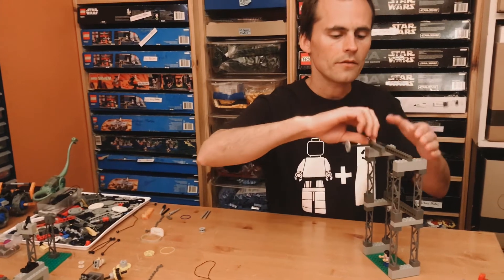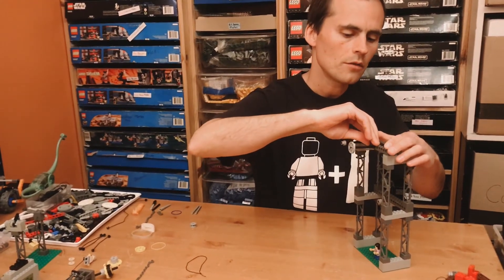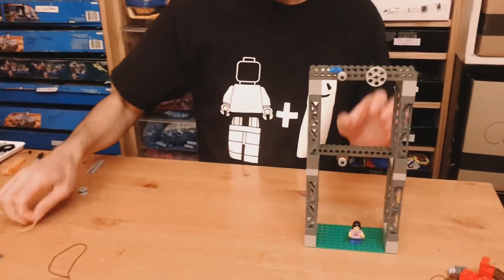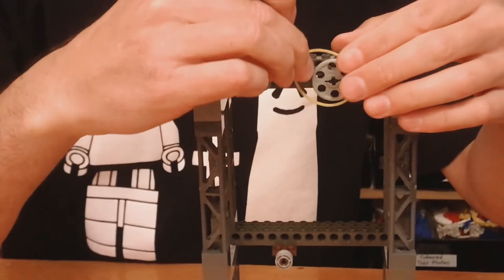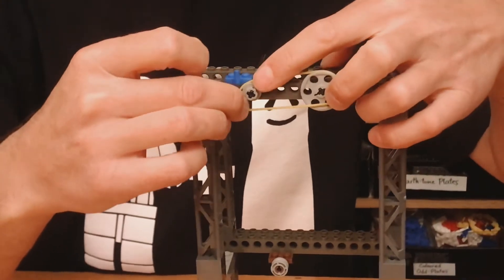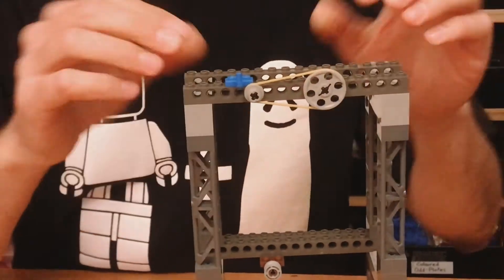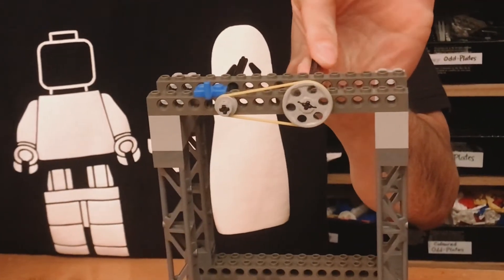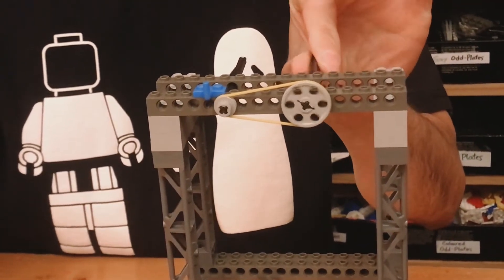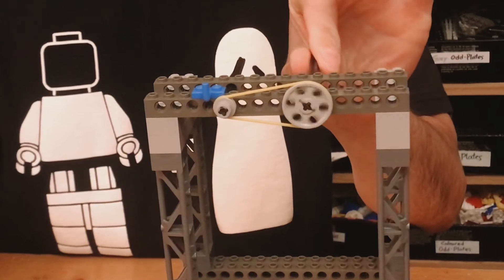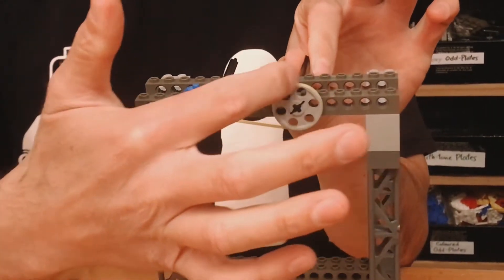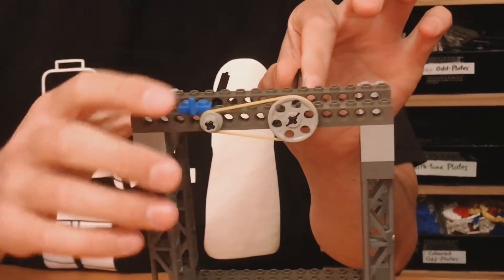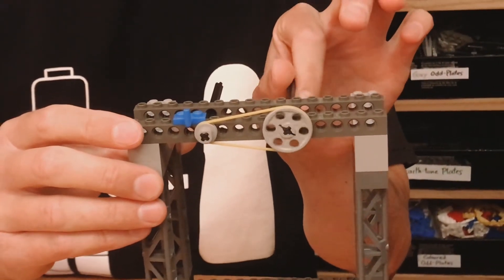So a belt drive is very similar to a chain drive, which we'll probably cover in other videos. But if I take a rubber band, this is a Lego rubber band from a Technic set, and I wrap it around two pulleys, I've now created a belt drive. So when I apply rotational energy to one axle, the friction as the rubber band travels around the two pulleys is going to cause the second axle to rotate as well.